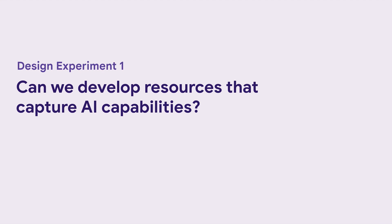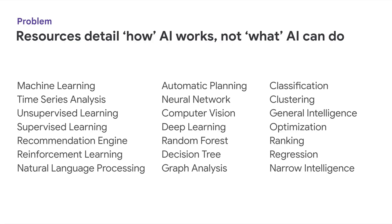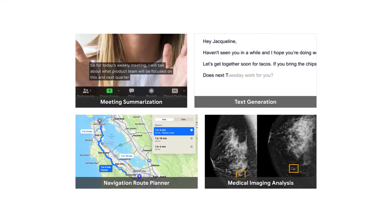Starting with the first design experiment: can we develop resources that capture AI capabilities? If you look at existing resources on AI, most of these detail how AI works instead of describing what AI can do. Building on best practices, we took an examples-based approach. We looked at common AI product features such as spam filter, text generation, meeting summarization, medical imaging analysis, and so on.